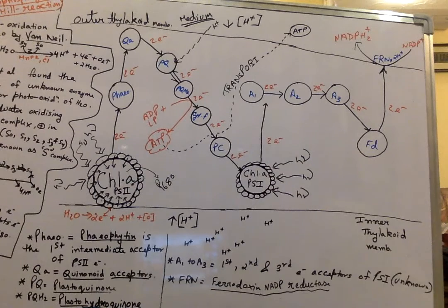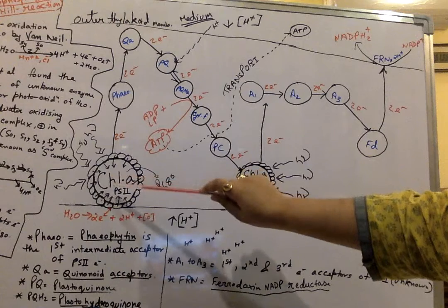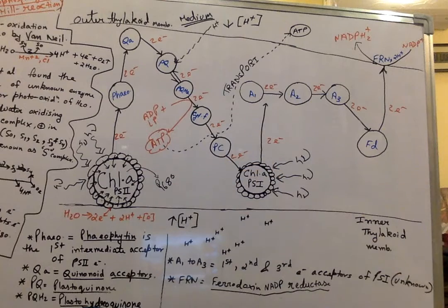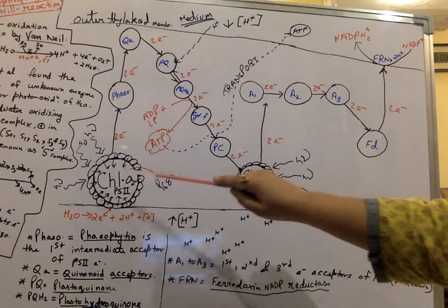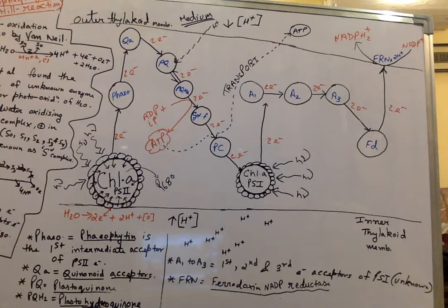These arrows represent the flow of energy from the antenna molecule to the reaction center. This will excite the reaction center of PS2. Now, as the reaction center of PS2 is reduced or having high electron potential, it will show a high tendency to donate or lose its electron to some other electron intermediate or electron acceptor having comparatively lower electron potential.